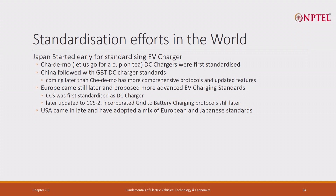What are the standardization efforts in the world? Basically, there are three primary standardization efforts. Japan started it because they started with electric vehicles. They came up with a concept called CHAdeMO. In Japanese, CHAdeMO actually means 'let us go for a cup of tea' — because when you came and parked the vehicle and started charging, it would take a long time, at least an hour, maybe more. So it is called CHAdeMO. DC chargers were standardized.